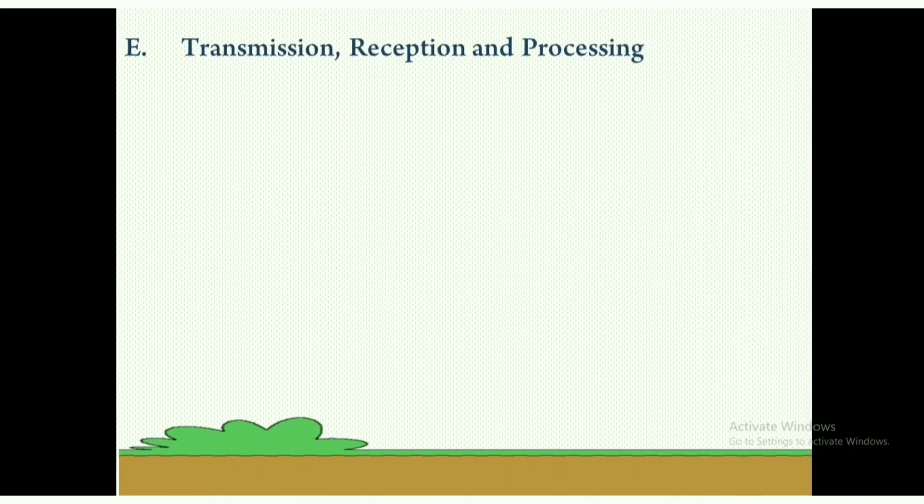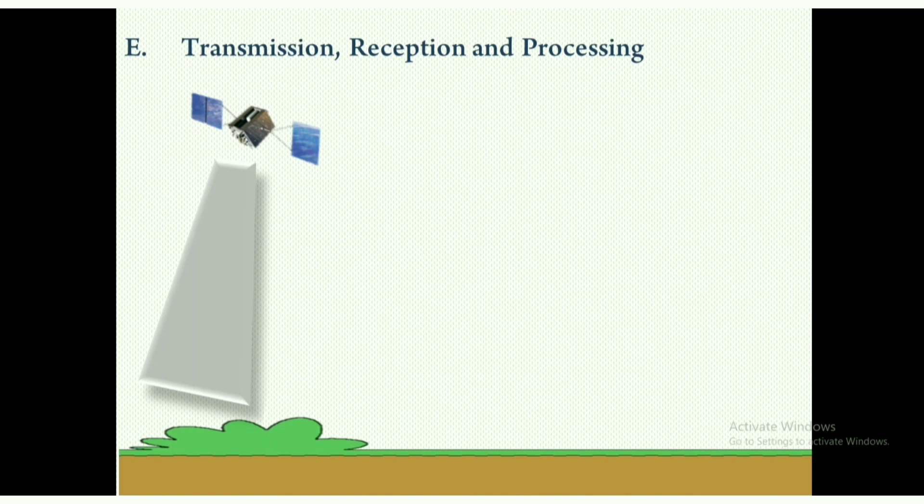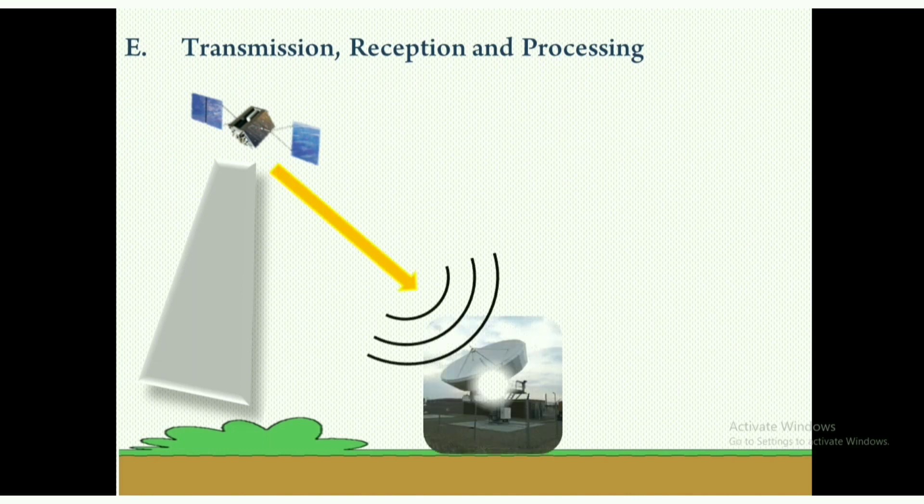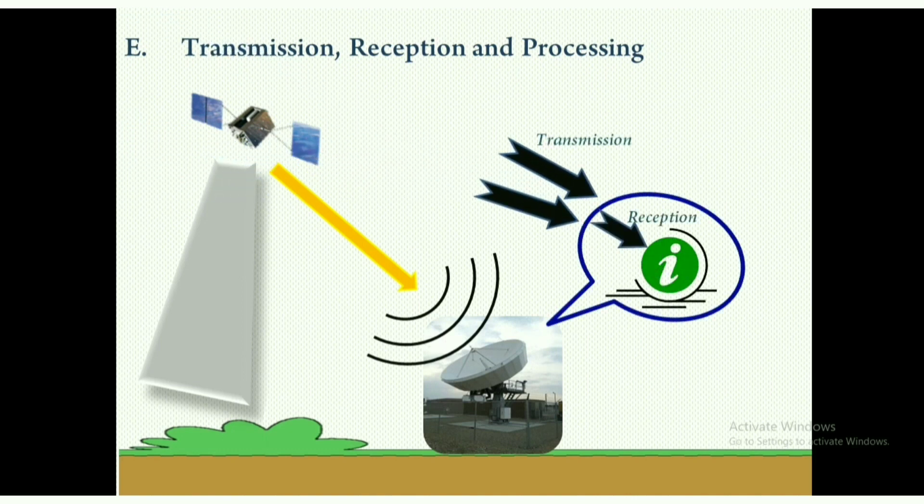When the sensor records and collects the information, the recorded data are sent back to a recording station. How does it send to the operating system? In case of a satellite sensor, the collected data are transmitted electronically. But in case of aircraft and ground-based sensors, they retrieve the data once the aircraft has landed on ground.